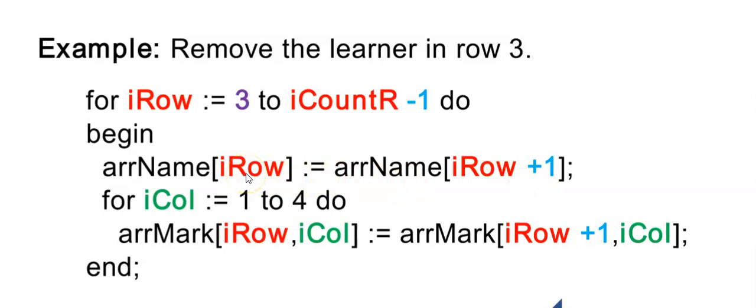So the current row, let's say row 3 that I want to replace, now gets the value of the next row. So for the first time that this loop executes, this will be 4. 3 plus 1 is 4. And that value will be placed over the name that used to be stored in the array position number 3.